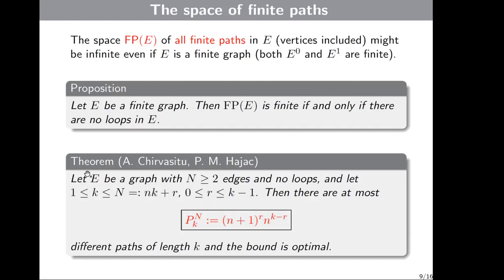If we have a graph E with N greater than or equal to 1 edges and no loops, and K is between 1 and N, then there are at most P(N,K) different paths of length K, and that bound is optimal. I will not prove this theorem today.